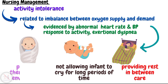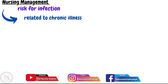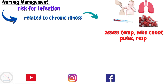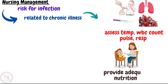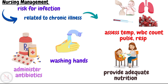Providing a thermoneutral environment, neither too hot nor too cold, is also important. The next nursing diagnosis is risk for infection related to chronic illness. Interventions include assessment of temperature, WBC count, pulse, and respirations since these all increase with infection, providing adequate nutrition as per the age of the infant, washing hands before giving care, and administering antibiotics as prescribed. This completes the lecture on aortic stenosis.